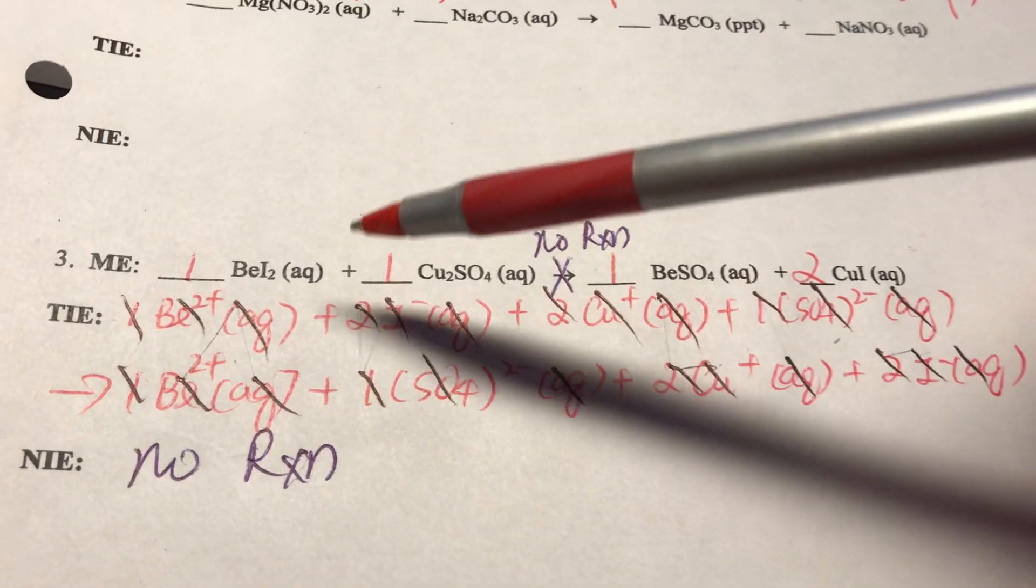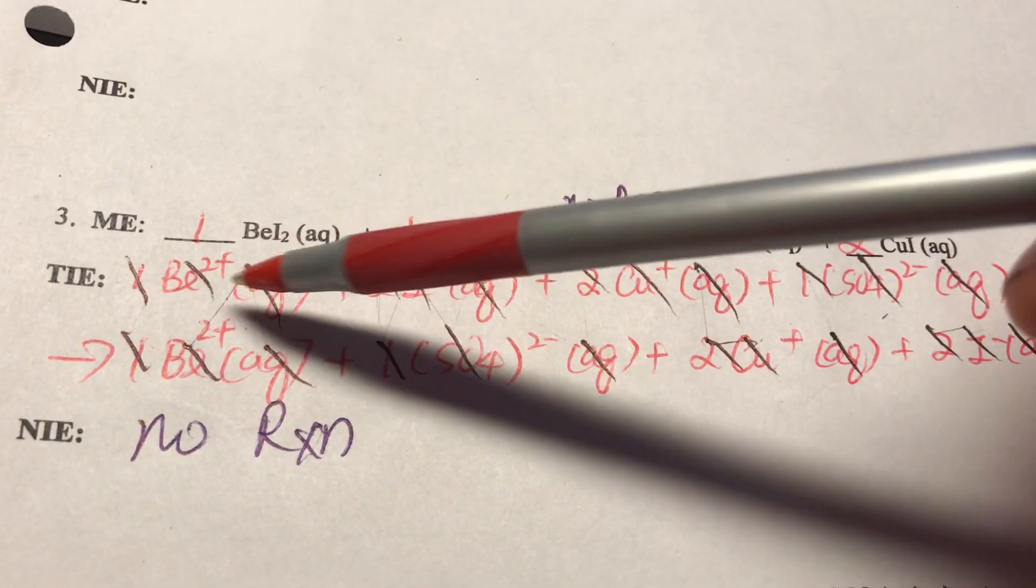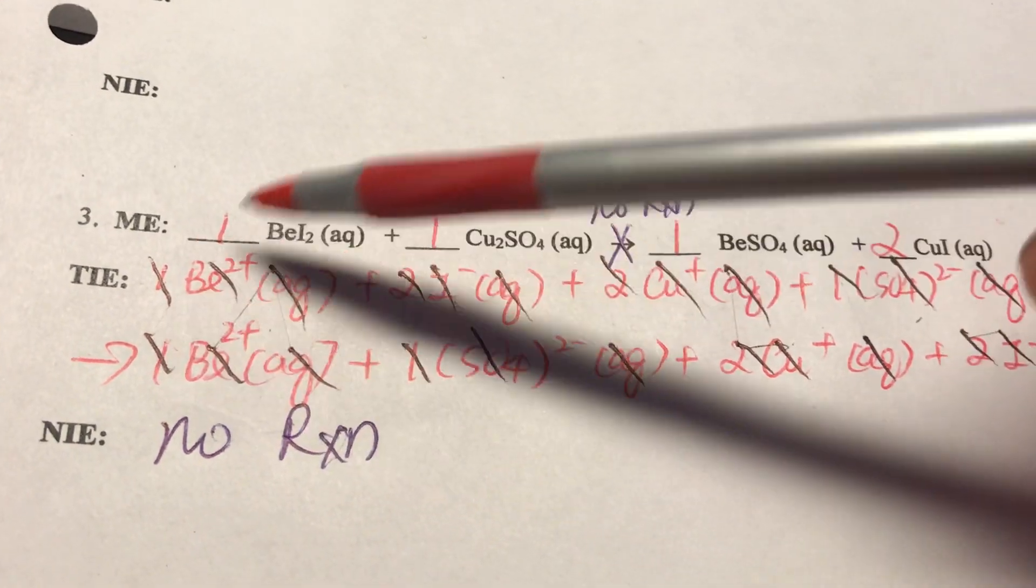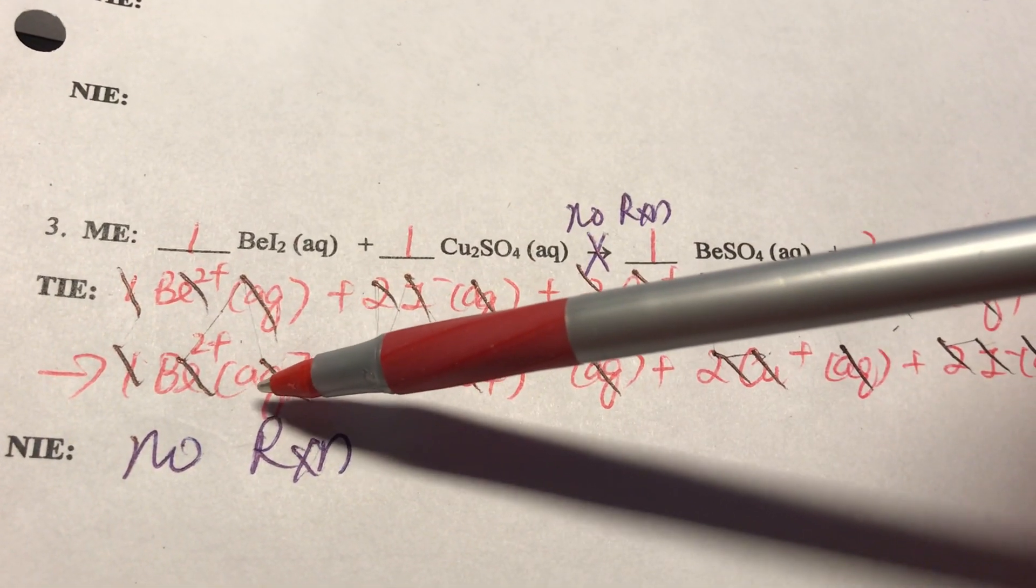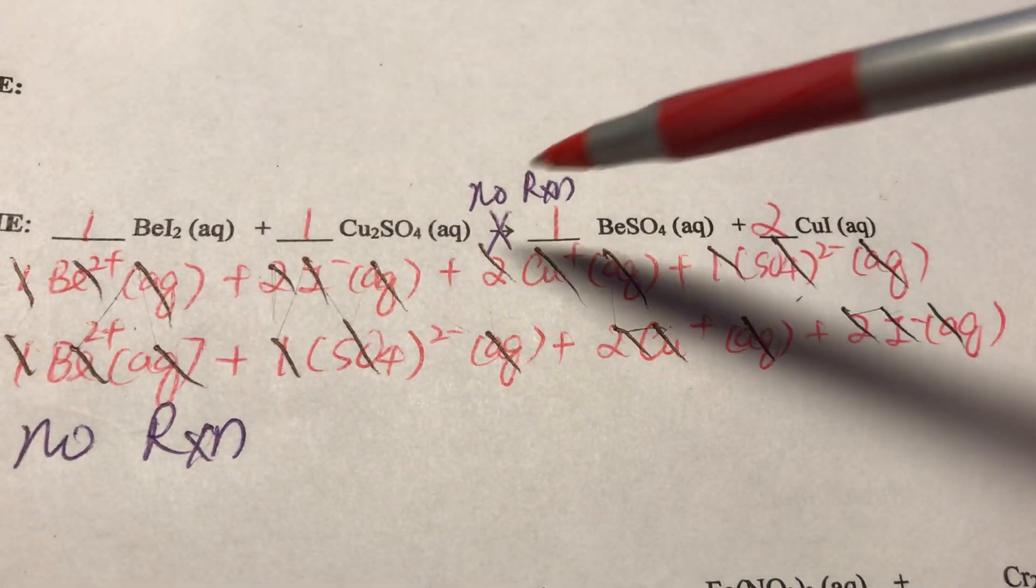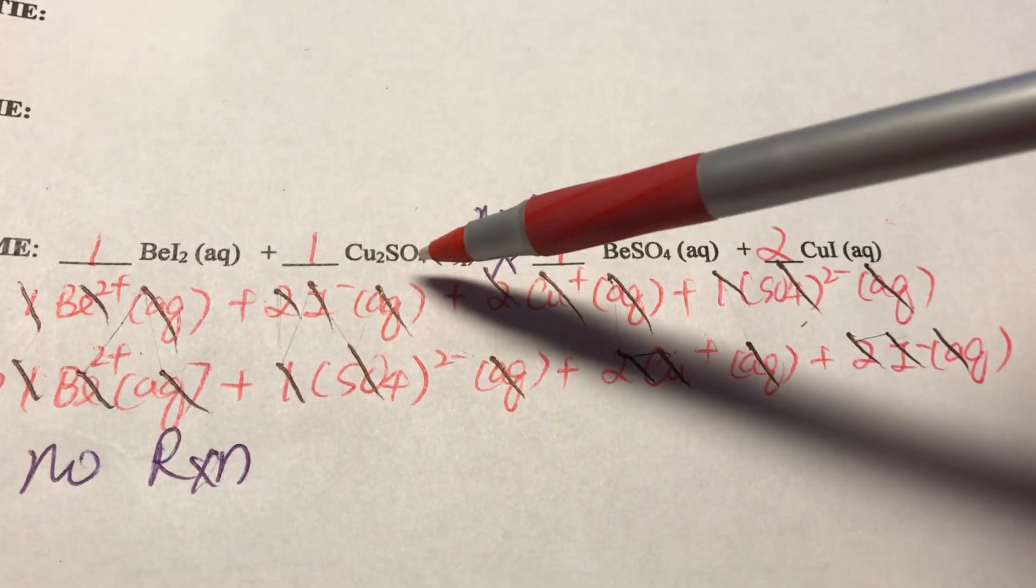We got to do the same thing. We double check if we have every single coefficient, charge, and the state the same. We can cross out those, the spectator ions. And if you check, actually everything cancels out: 2I⁻(aq) cancel, 2Cu⁺(aq) cancel, 1 SO₄²⁻, exactly same thing, they cancel.